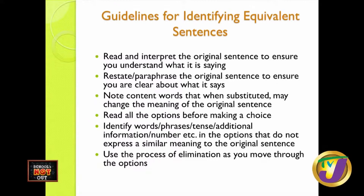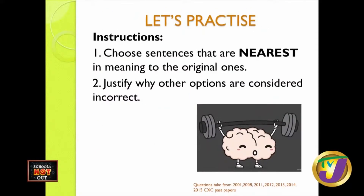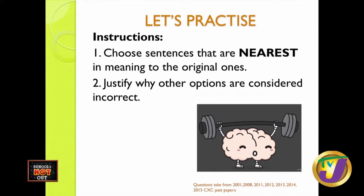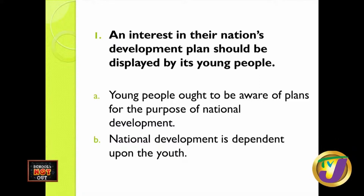We are going to have a repeat of this program so you will get the information again. Now, with all that said, let us do some practice. Your instructions: one, choose sentences that are nearest in meaning to the original ones; and two, justify why other options are considered incorrect. Number one says: an interest in their nation's development plan should be displayed by its young people.